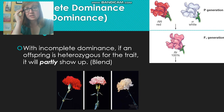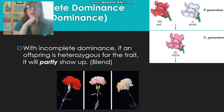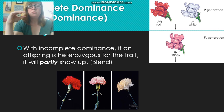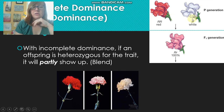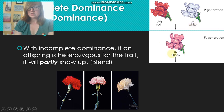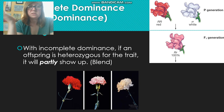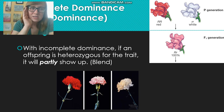Here's how to think about it: one gene — the capital R allele — says 'make red color.' The lowercase r allele can be thought of as broken; it says 'make nothing, don't make any color.' When they're put together, you get one gene saying make red and the other making nothing, so it makes some red — and that appears to us as pink.